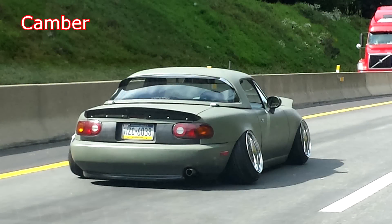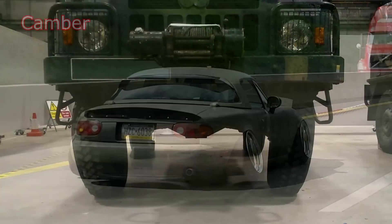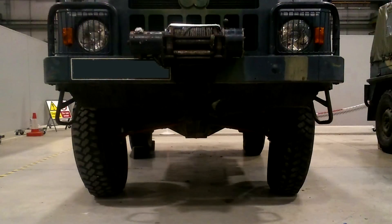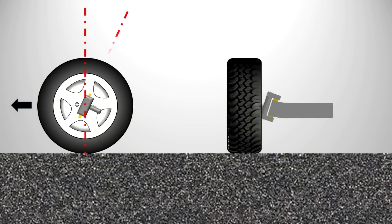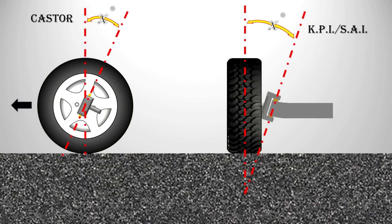In this short video we're going to look at camber angles in reference to steering and suspension geometry. Other angles include caster, kingpin inclination, steering axis inclination and scrub radius, which we'll look at in other videos.